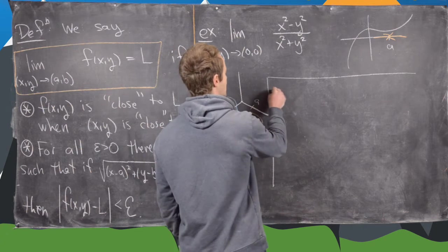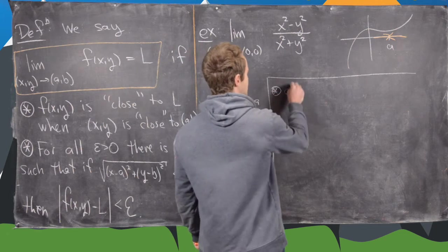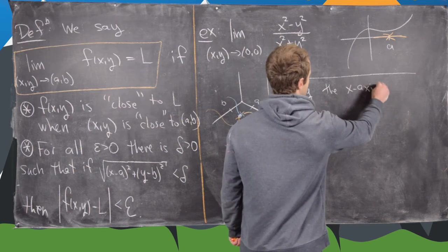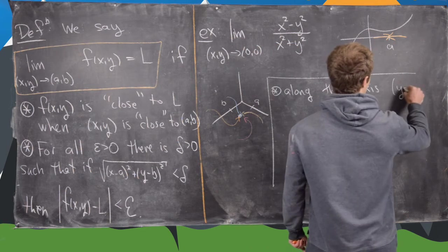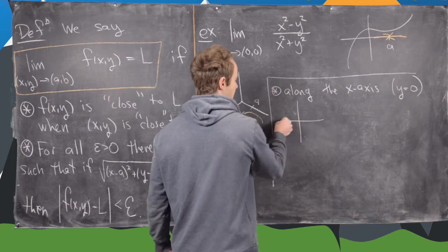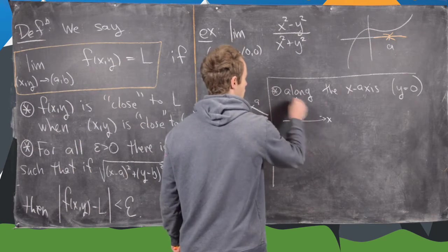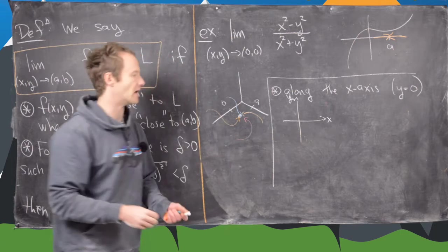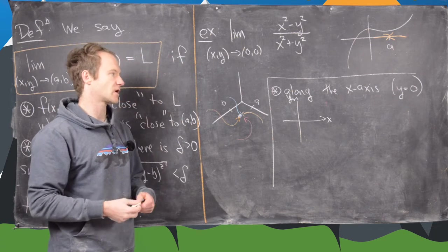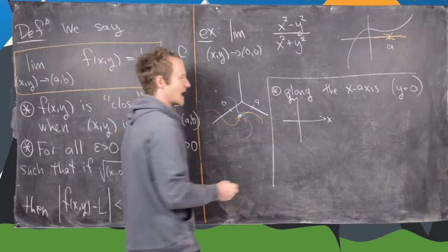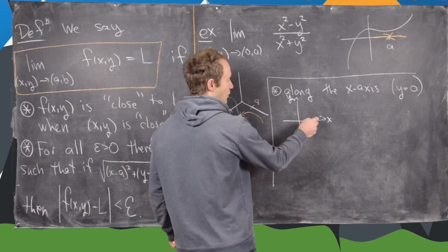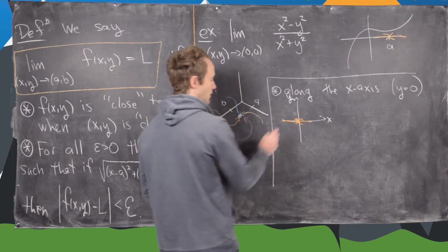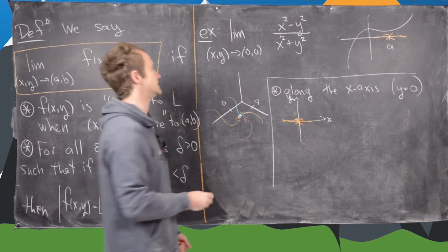So let's look at this limit, and we're going to do it two different ways. We're going to calculate this along the x axis first. Recall that the x axis is y equals zero. Here I'll draw the coordinate plane. This is the domain of our function, the graph of our function would be above this coordinate plane. If we're coming along the x axis, then that means we're calculating the limit along here. So that means we've set y equal to zero.